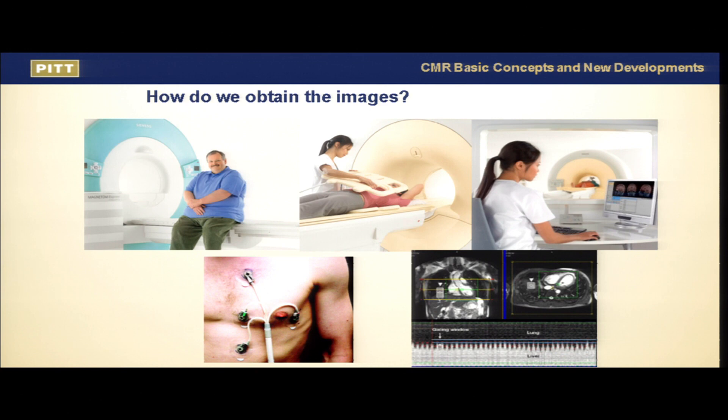We need a trained technologist who provides instructions to the patient, including breath-holding. We should be sitting next to them because this is a very live and dynamic study — once the images are acquired, you cannot go back. This is what we call the vector ECG: how we obtain the EKG signal to synchronize cardiac motion, making cardiac MRI unique compared to brain, knee, and back MRIs. Depending on the pulse sequence, we may also need to trigger according to diaphragmatic motion for 3D acquisition.